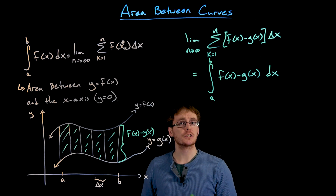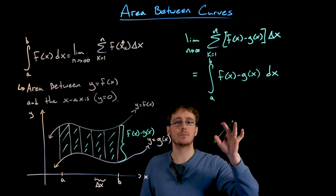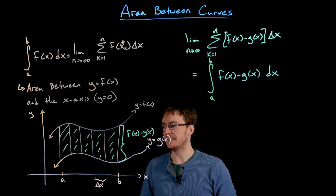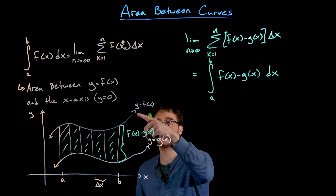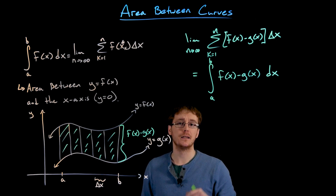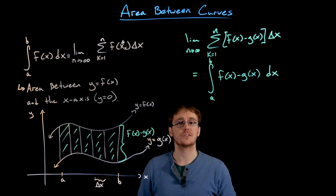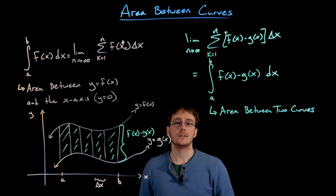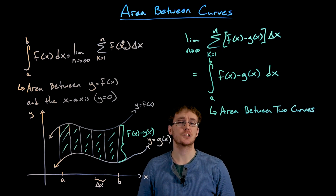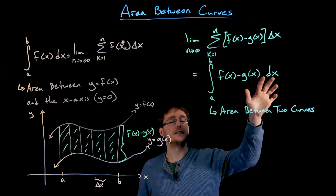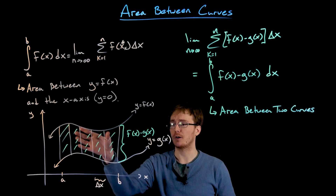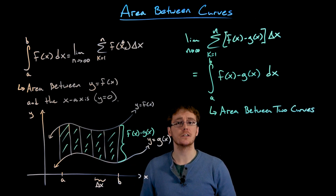So now we have this formula for finding the area between two curves: we take the definite integral of the difference between those two functions. We just have to be careful when we set this integral up. Our interval from a to b has to be the interval where our curve on top is always on top and our curve on bottom is always on bottom, and the first function in our difference must be the top curve and the second must be the lower curve. This is one formula, but there will be another depending on how our curves are oriented.